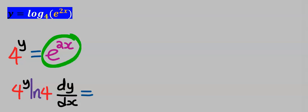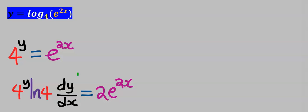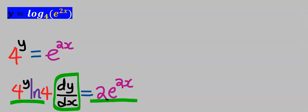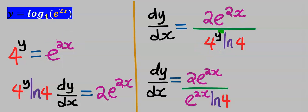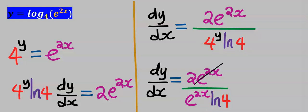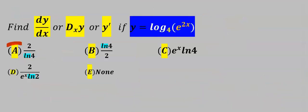Next, differentiate e to the power of 2x using the chain rule. The differentiation of e to the power of 2x is 2e to the power of 2x. Next, make dy/dx the subject — this will move over to the other side and divide everything. Then replace 4 to the power of Y with e to the power of 2x. So instead of 4 to the power of Y, we now have e to the power of 2x. The e to the power of 2x cancels, and this is our dy/dx. From the options, our answer is A.